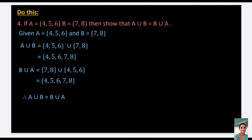If A = {4, 5, 6} and B = {7, 8}, show that A ∪ B = B ∪ A. A ∪ B = {4, 5, 6, 7, 8}. B ∪ A: writing B first gives {7, 8} ∪ {4, 5, 6} = {4, 5, 6, 7, 8}. Both are equal, so A ∪ B = B ∪ A. This shows that union of sets is always commutative.